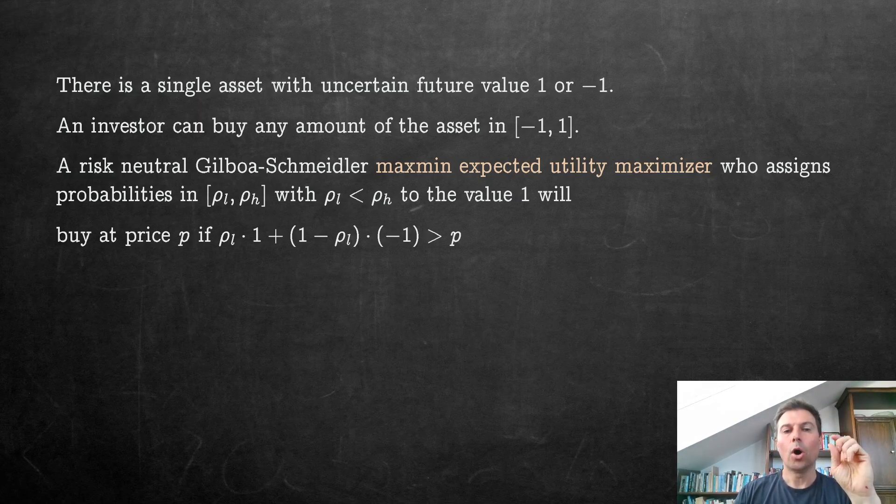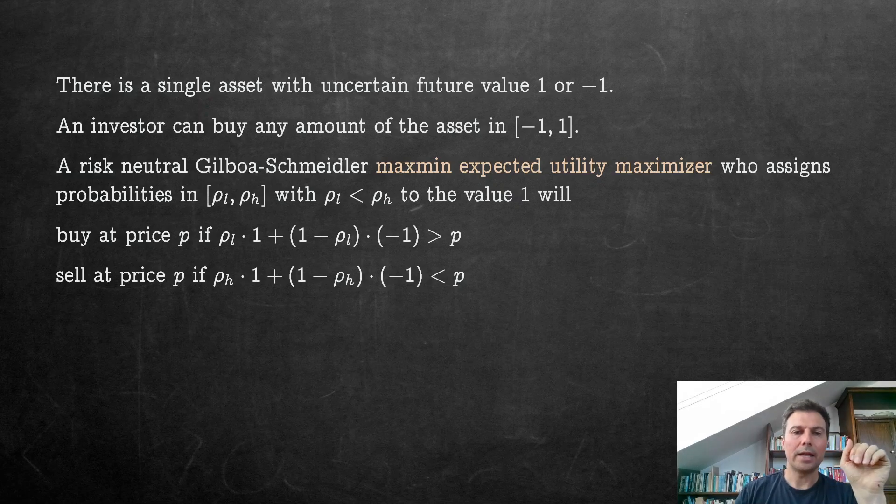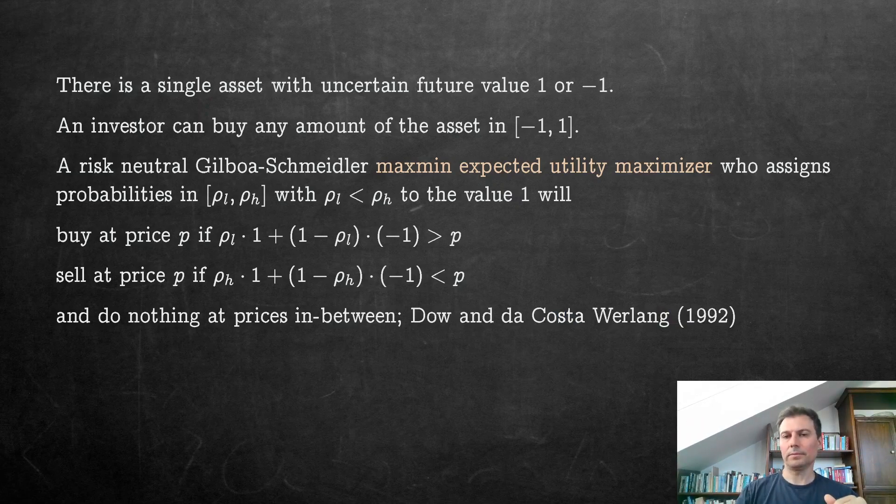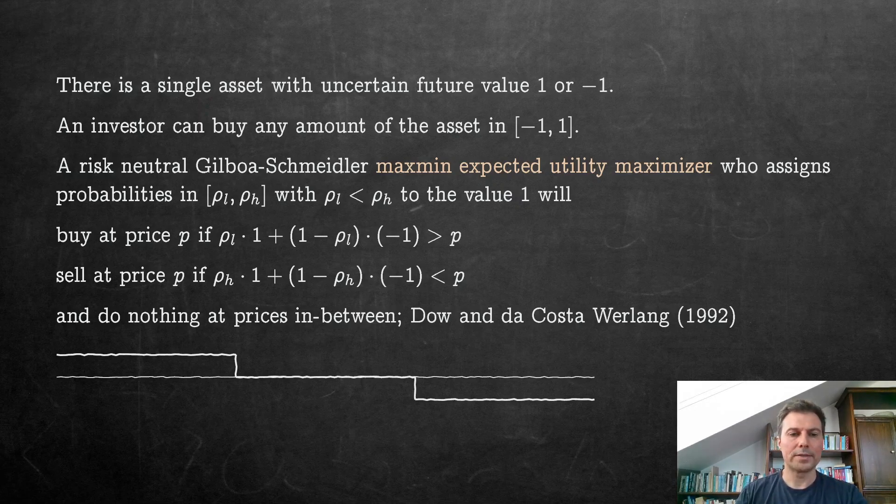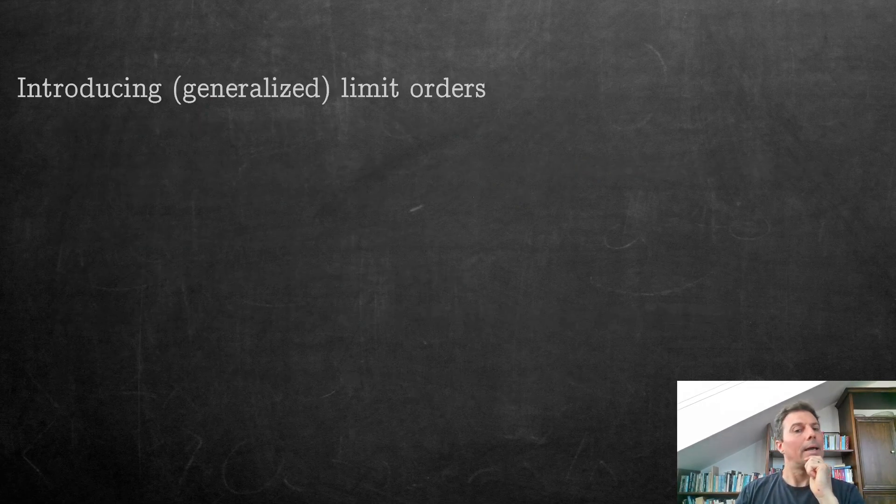They will buy at the price P only if the lowest expected value, basically, exceeds the price, and they will sell only if the highest expected value is below the price. That means there is a range of prices in between, as Dow and Werlang point out, where this investor would do nothing. So schematically here, this is the demand function. On the axis you have prices; for very low prices on the left, you buy, and then it jumps down at this lower expected value, and then you do nothing, and then it jumps down and you sell after this last pricing.